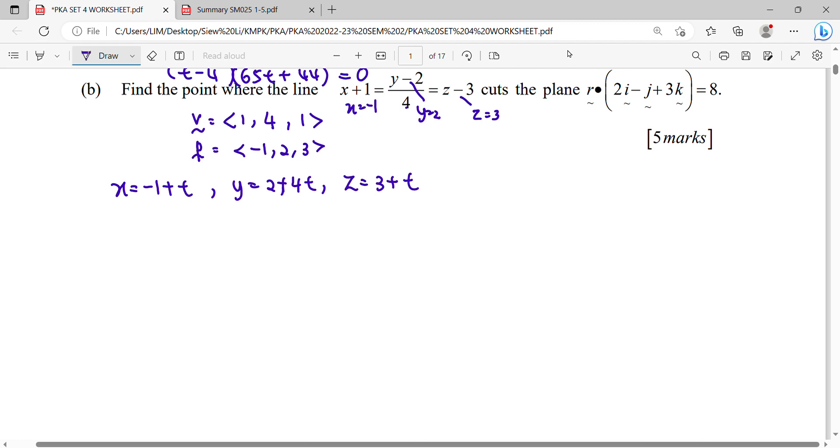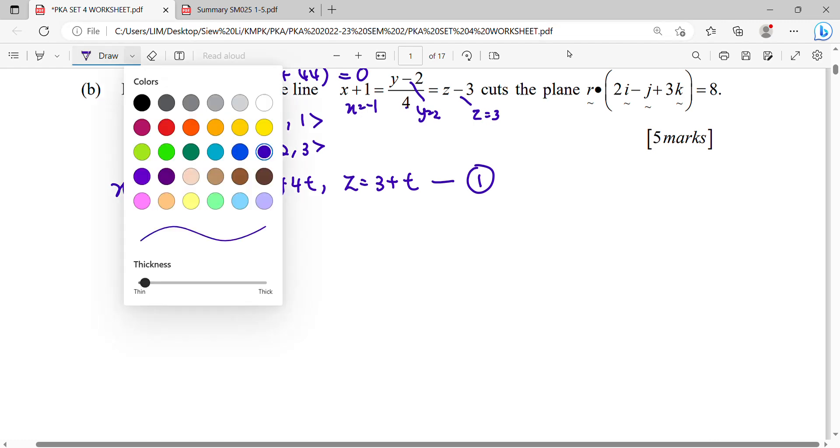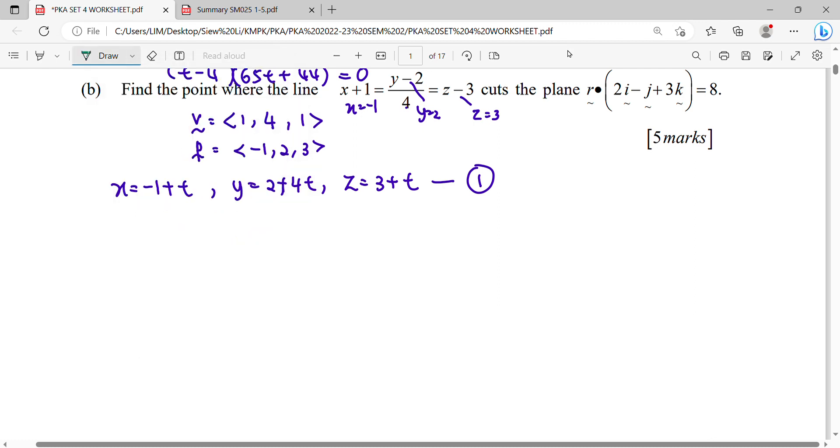So equation one comes from the line equation. Meanwhile, for equation two, it will be our plane equation in Cartesian. Cartesian means you need to expand completely, x, y, z multiply this vector, equals 8. So it will be 2x minus y plus 3z equals to 8, equation two.